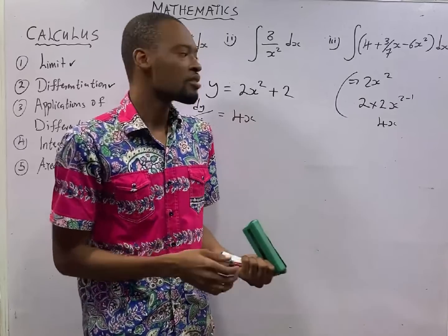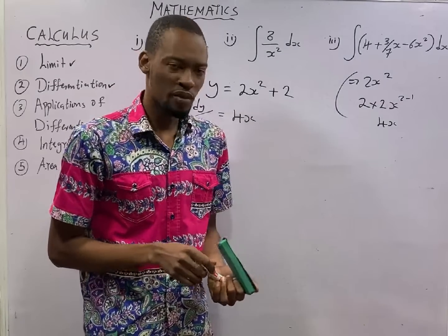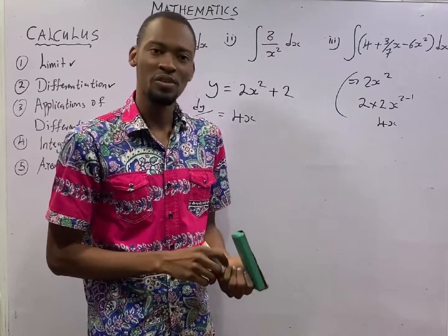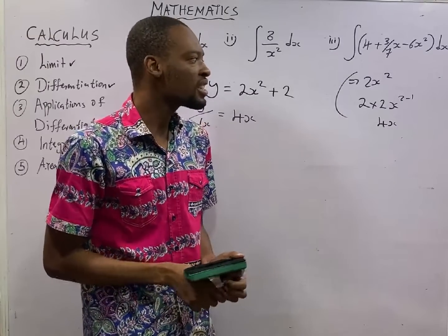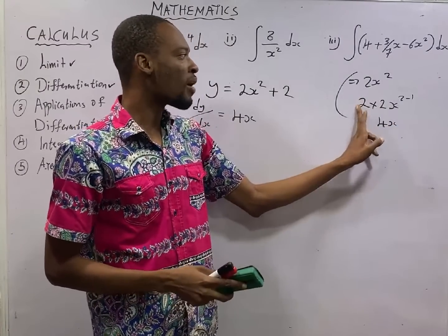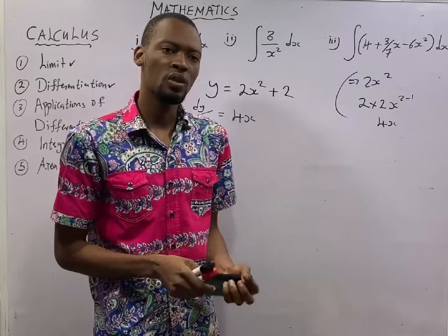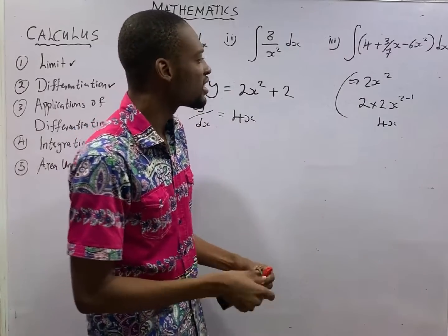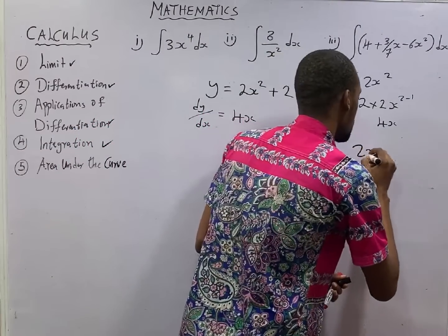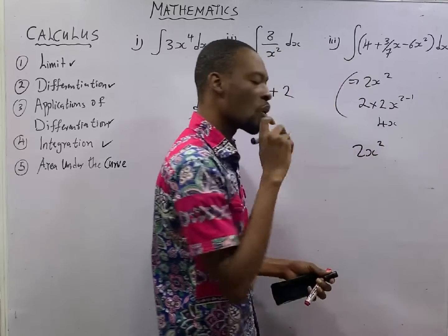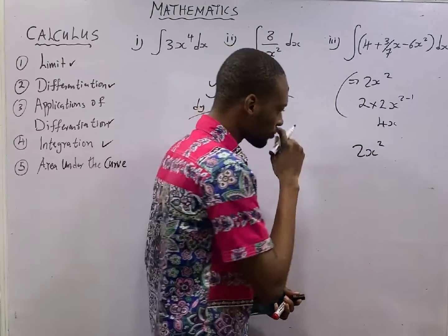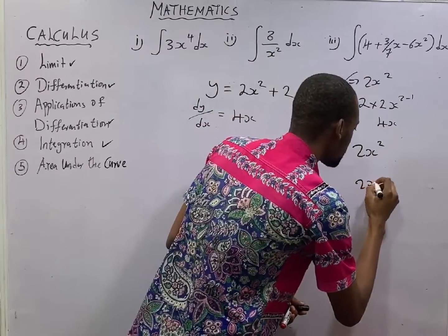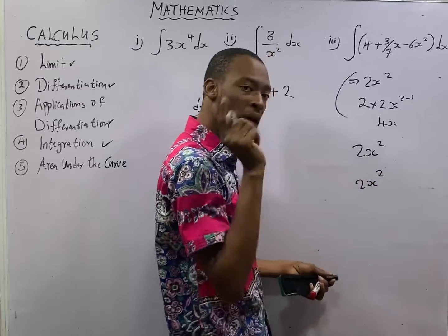To integrate, you don't subtract 1 from the power. You add 1 to the power. To integrate, you don't multiply with the power. You divide with the power. Which implies that, if you are integrating 4x. What you will simply do is, 4x. Add 1 to the power.